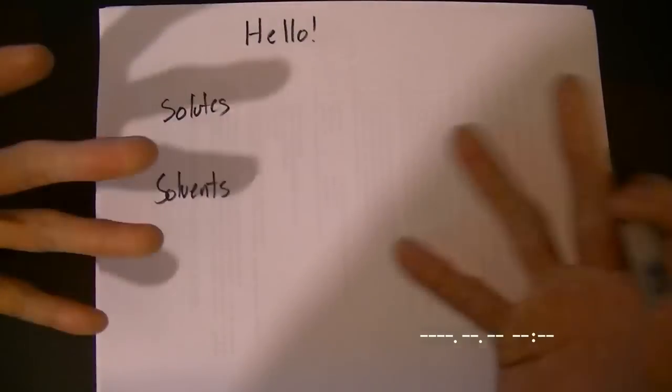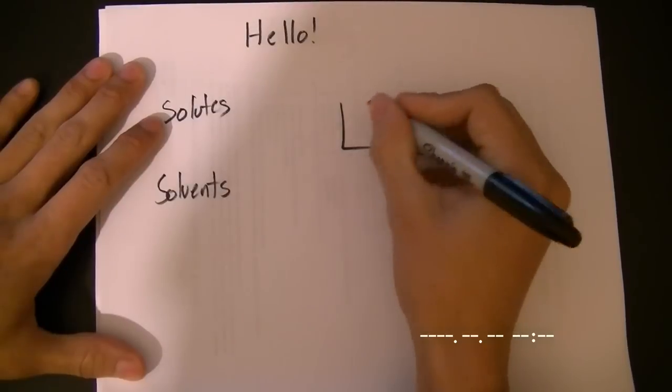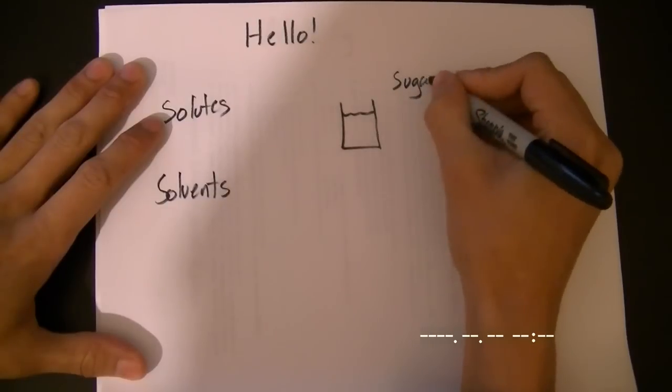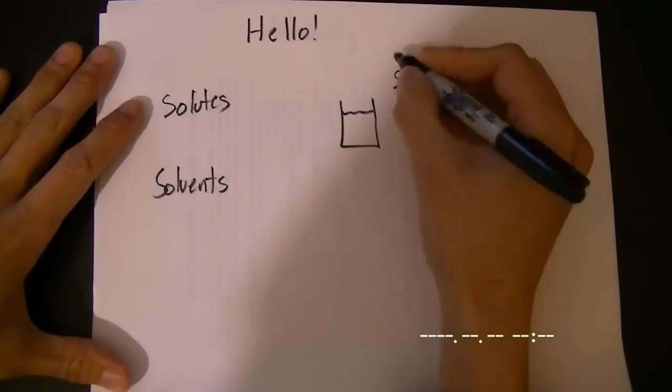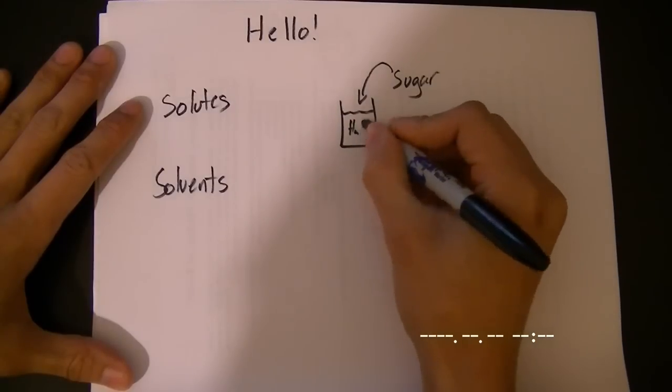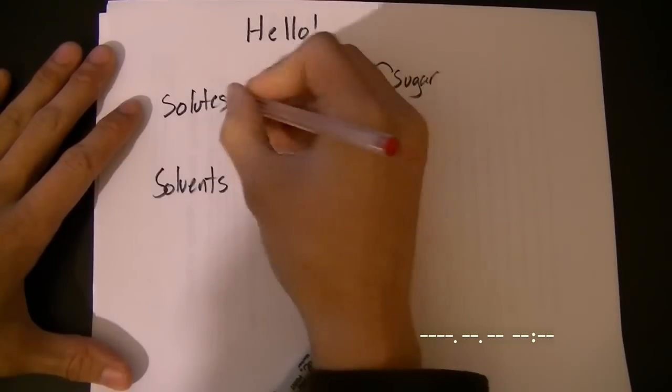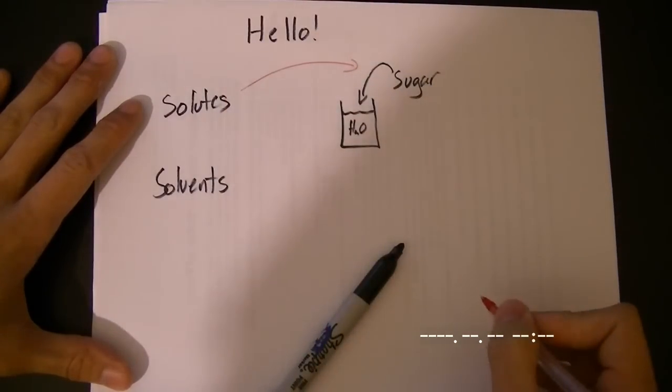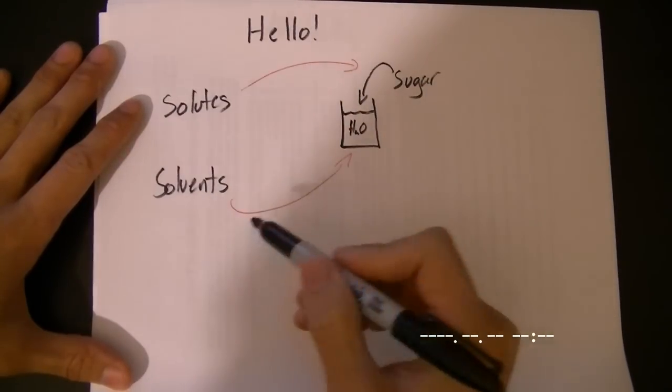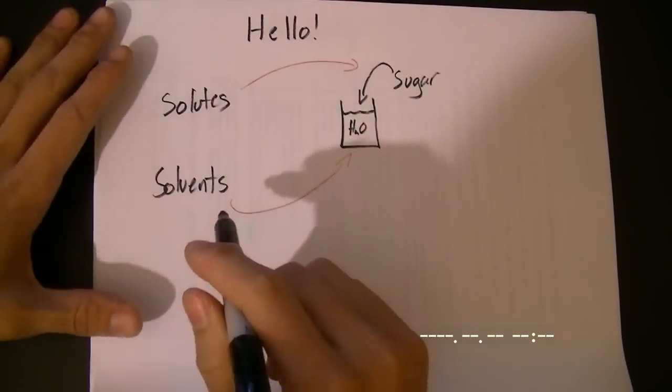We know that solutions are basically made of solutes and solvents. So, for example, we had some sort of cup of water, and we had some sugar, and we were just craving sugar water one day. We decided to dissolve the sugar in the water, H2O. We know that our solute would be the sugar.